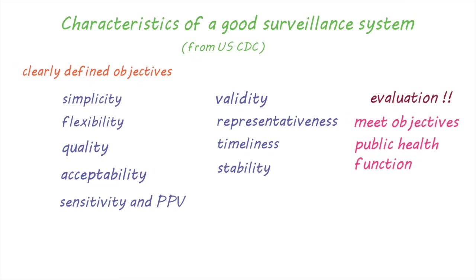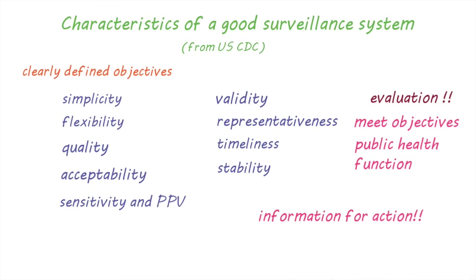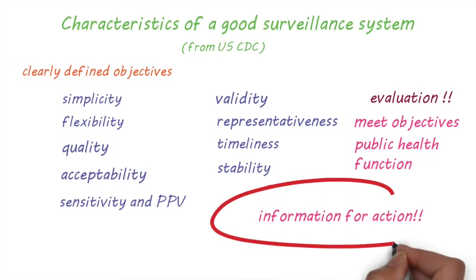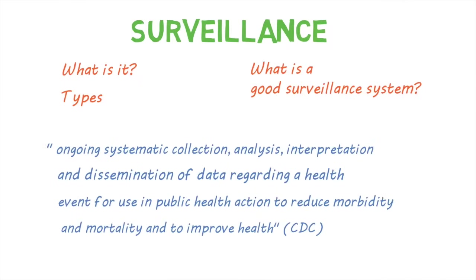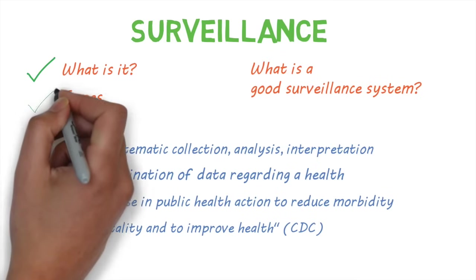Finally, surveillance isn't just about monitoring health events, but providing useful information to enable public health action. So that's an overview of public health surveillance. We've had a look at what surveillance is, different types of surveillance, and characteristics of a good surveillance system.